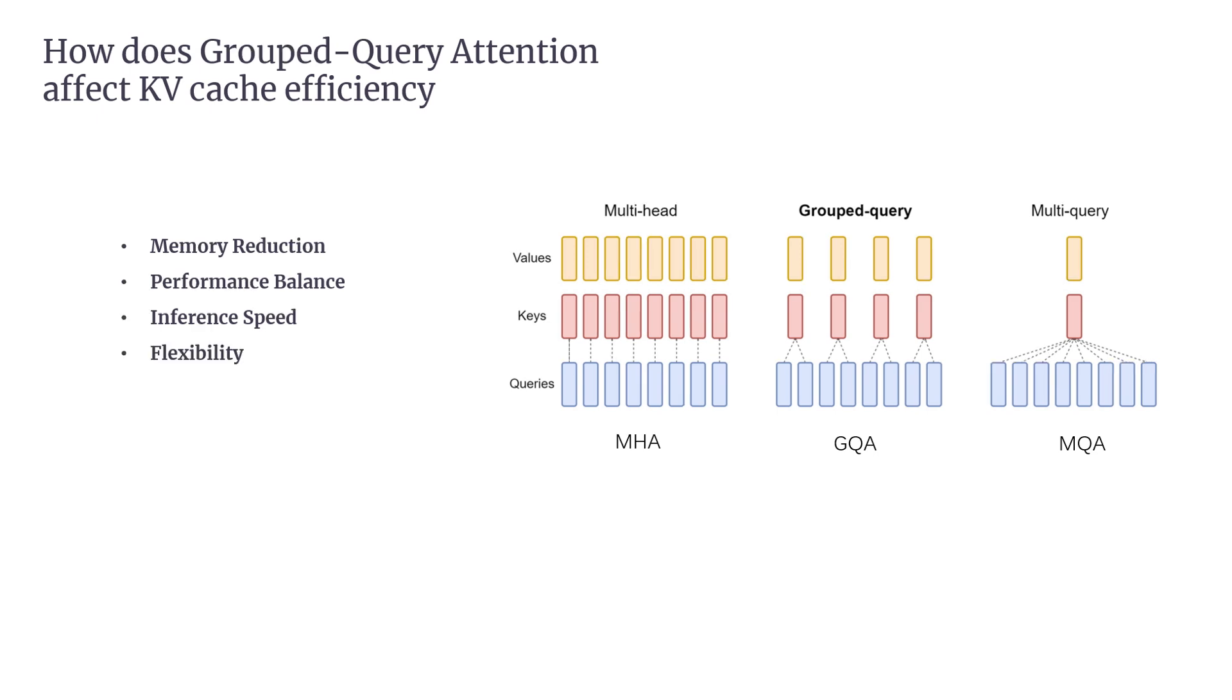The fourth, Flexibility. GQA is flexible and can be adjusted to fit the needs of specific applications. The number of groups in GQA can be fine-tuned to find the best trade-off between efficiency and performance. For example, using up to eight groups in GQA results in only modest slowdowns compared to MQA, offering a good balance between speed and model accuracy. This flexibility is useful for optimizing models depending on specific hardware or memory constraints.